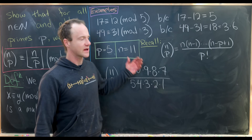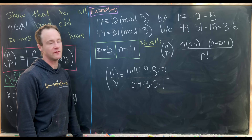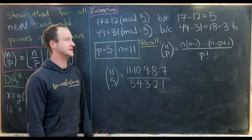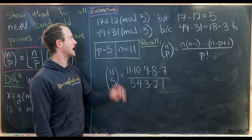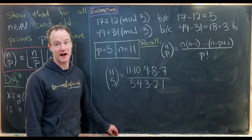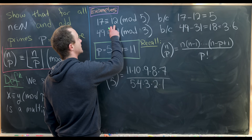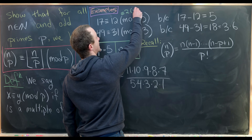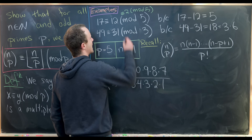Let's look at a couple of examples. 17 is congruent to 12 mod 5 because 17 minus 12 equals 5. We can also think of it as 17 and 12 having the same remainder when dividing by 5 — that's an equivalent definition. Not only are these congruent to each other mod 5, but they are also congruent to 2 mod 5.